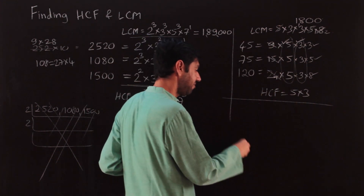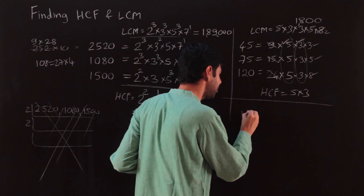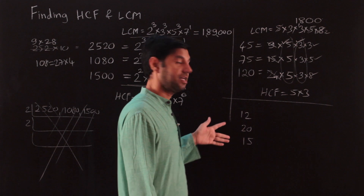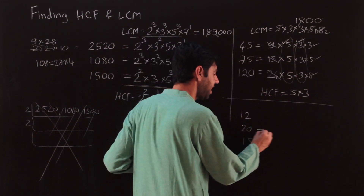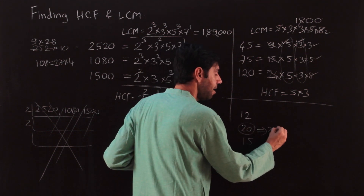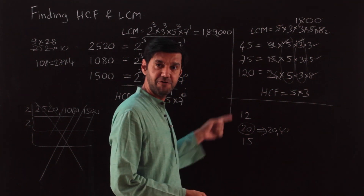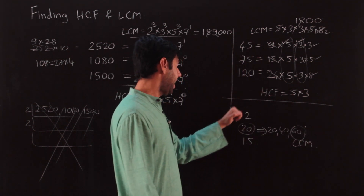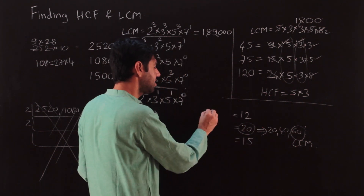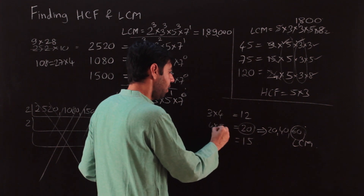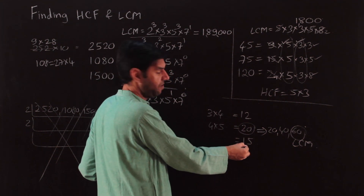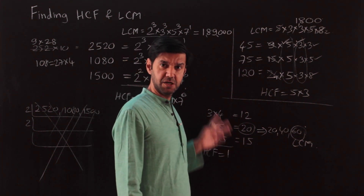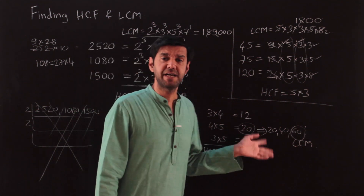For very easy numbers like LCM of 12, 20, and 15, just use multiples. Start with the largest: 20, 40 — is 40 a multiple of 12 or 15? No. Try 60 — is 60 a multiple of 12? Yes. Is it a multiple of 15? Yes. So LCM = 60. For HCF: 12=3×4, 20=4×5, 15=3×5. There's no factor common to all three, so HCF = 1.